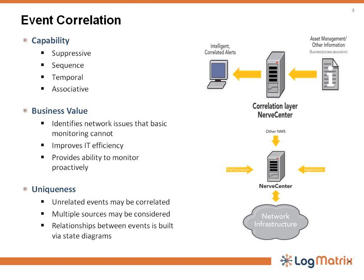NerveCenter has a very powerful event correlation engine that allows it to identify network issues that basic monitoring cannot, and provides an ability to monitor proactively. NerveCenter supports the user's ability to add custom event processing or rules via models, correlating unrelated events and events from multiple sources.